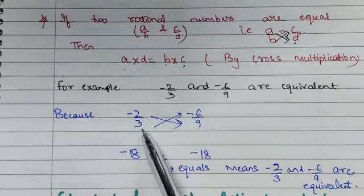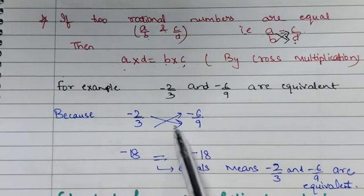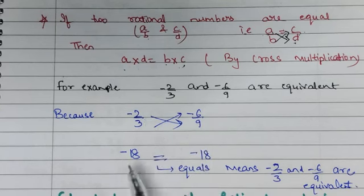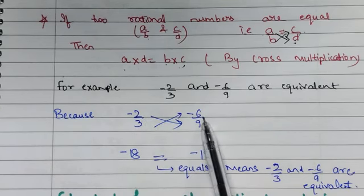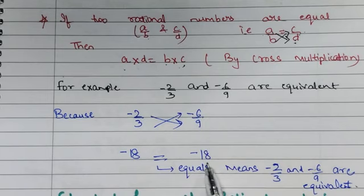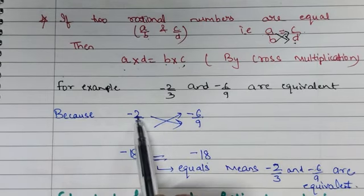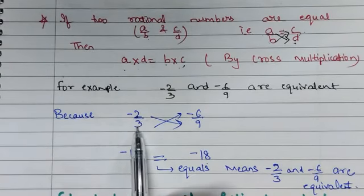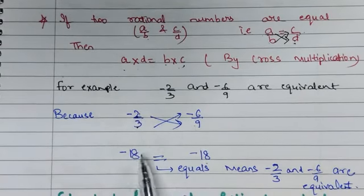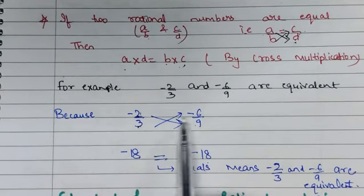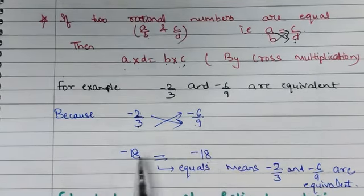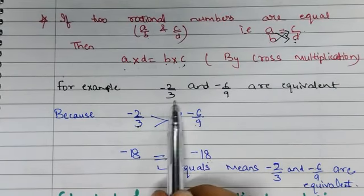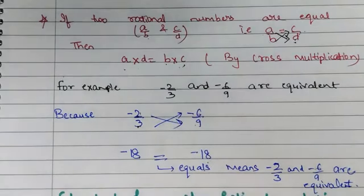We have minus 2 by 3 and minus 6 by 9. Let us do the cross multiplication. Minus 2 into 9 gives minus 18. 3 into minus 6 also gives minus 18. Always keep in mind: start from the first fraction. Since both cross products are minus 18, these two fractions are equivalent.